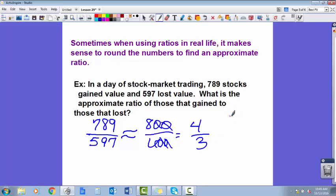When you're talking about real life and you're talking about a ratio, it makes so much more sense to say the ratio of those that gained to lost was about 4 to 3 rather than 789 to 597. So it makes much more sense to round them off, and then that would be an approximate ratio.